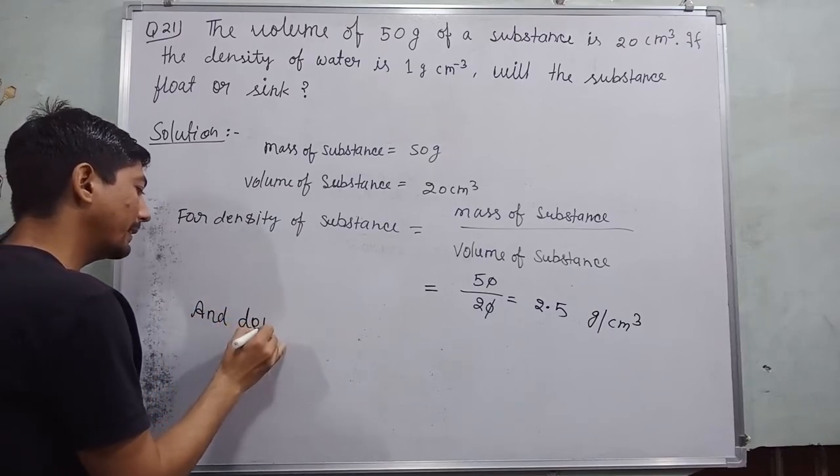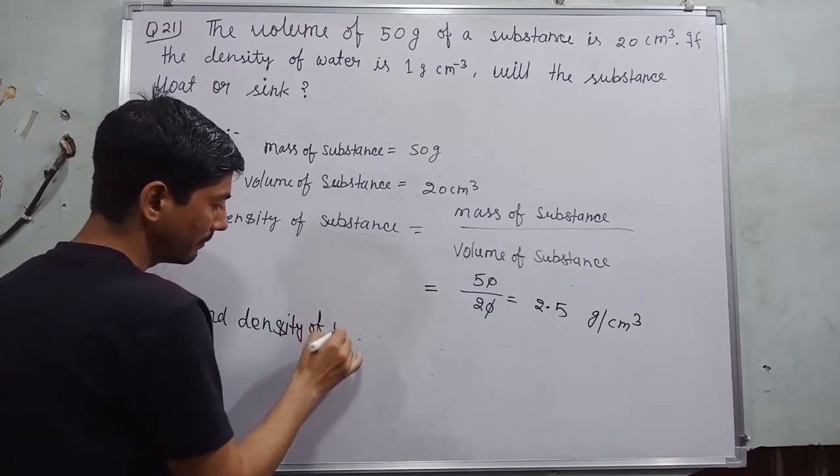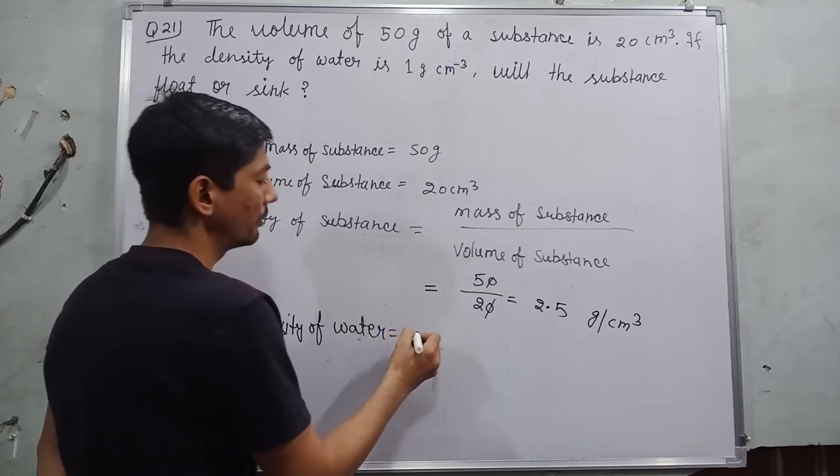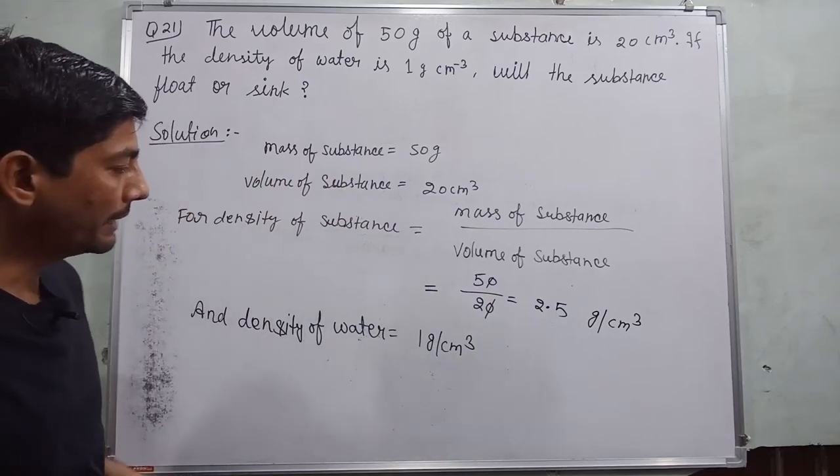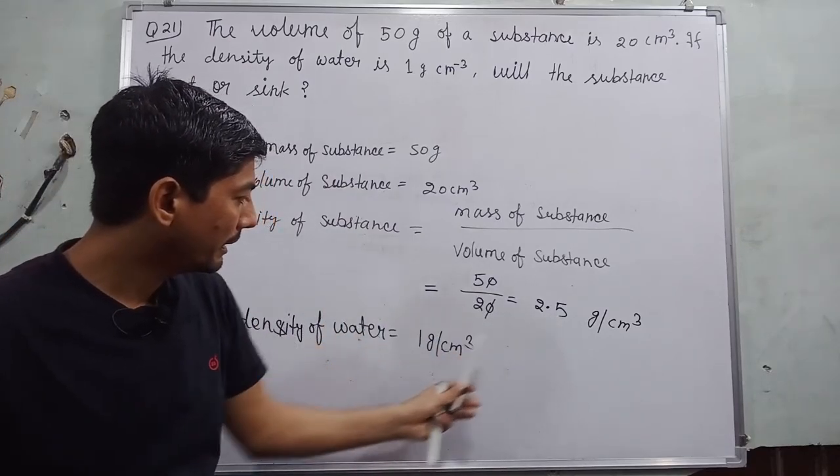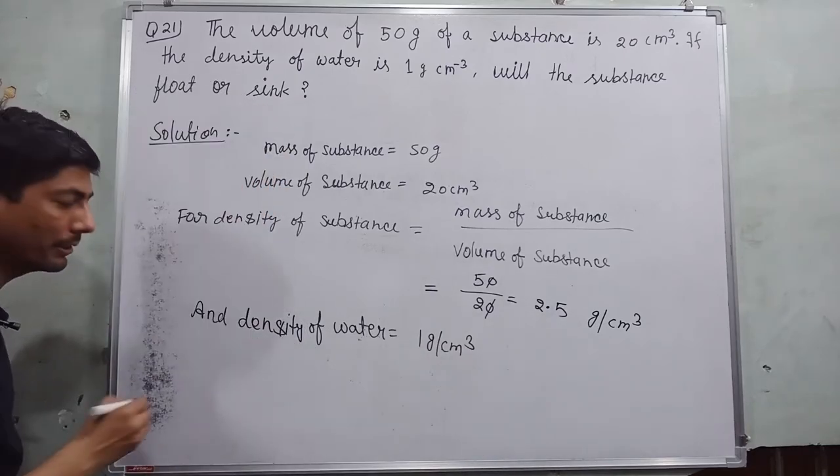And density of water is given, which is equal to 1 gram per centimeter cube. When you observe carefully, density of substance is more than density of water. 2.5 is greater than 1, so what we conclude?